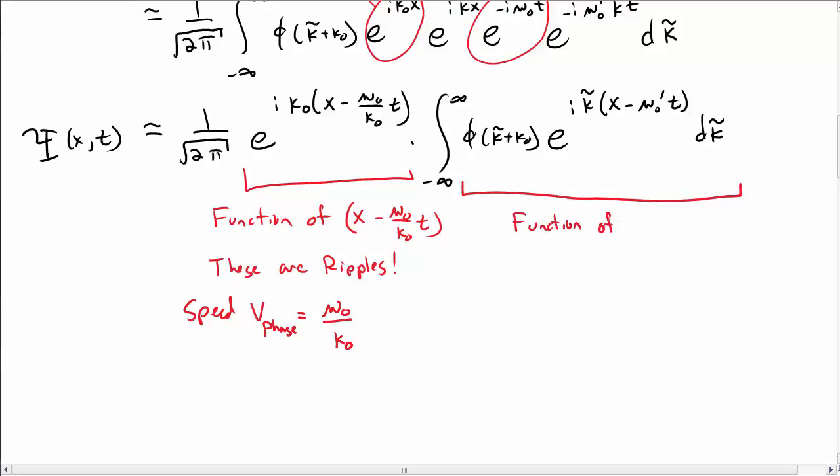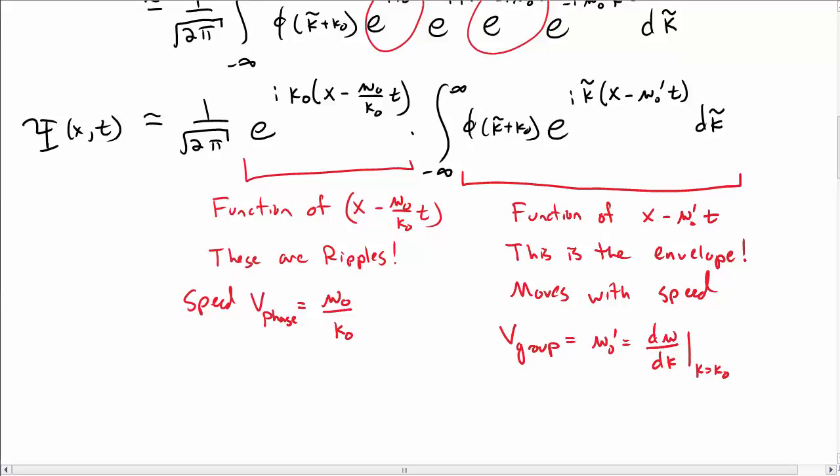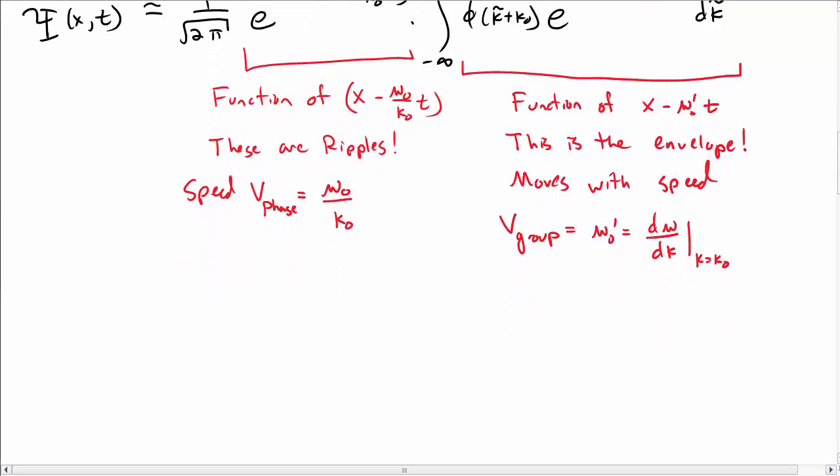This term, in contrast, is a function of x minus omega_0 prime t. And we interpret this as the envelope of the wave packet. And this propagates and moves with a speed of the group velocity v_group, and that is then omega_0 prime, which writing that out is d omega/dk evaluated at k equal to k0. So this is the difference between the ripples and the group velocity.